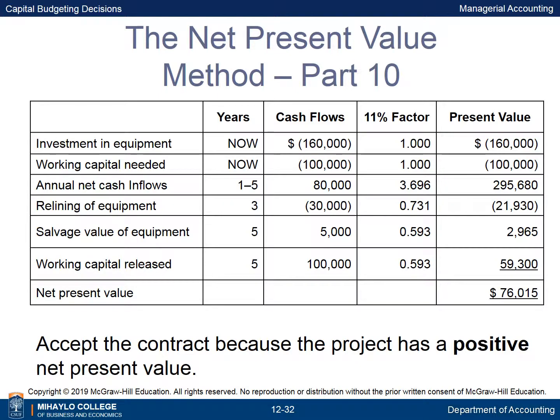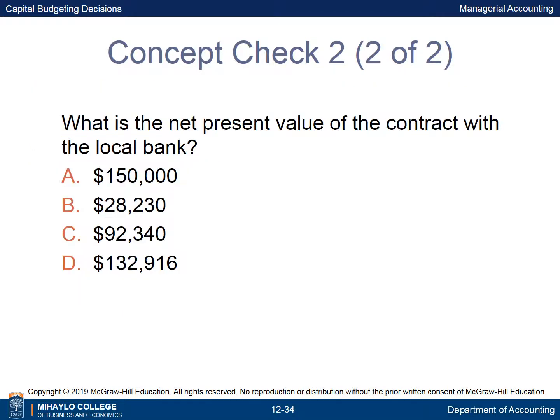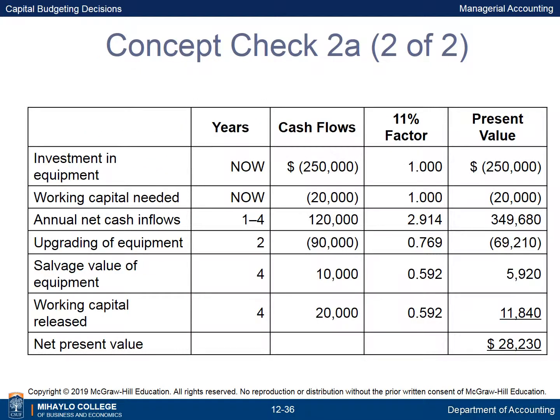Accept the contract because the project has a positive net present value. Denny Associates has been offered a four-year contract to supply computing requirements for a local bank. The working capital would be released at the end of the contract. Denny Associates requires a 14% return. The net present value of the contract is $28,230.